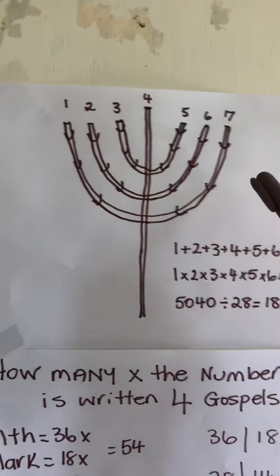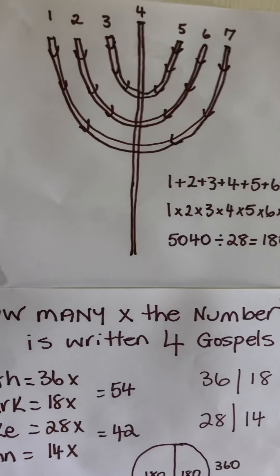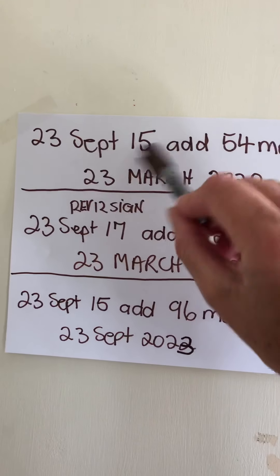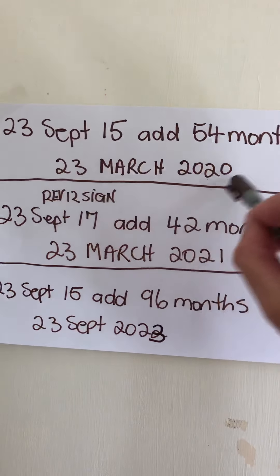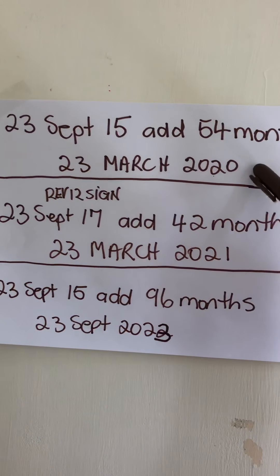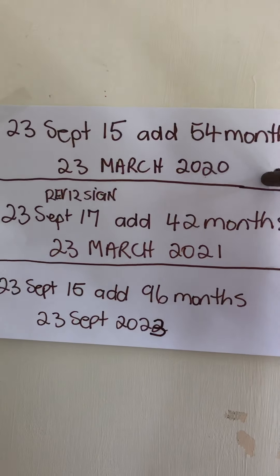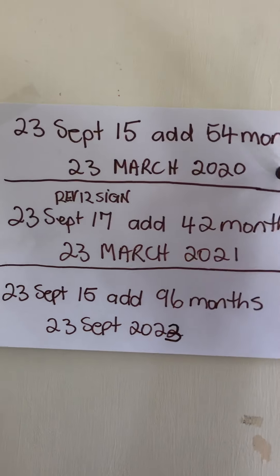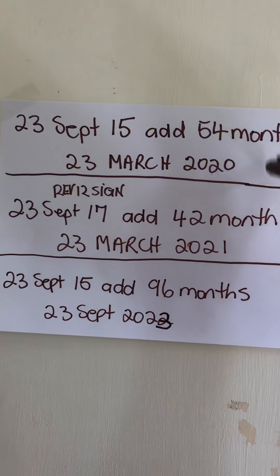This is the menorah. From the date the covenant was made at 54 months brings us to the 23rd of March 2020. On that day, Croatia had an earthquake and a car in the damage had a number plate of 9696.